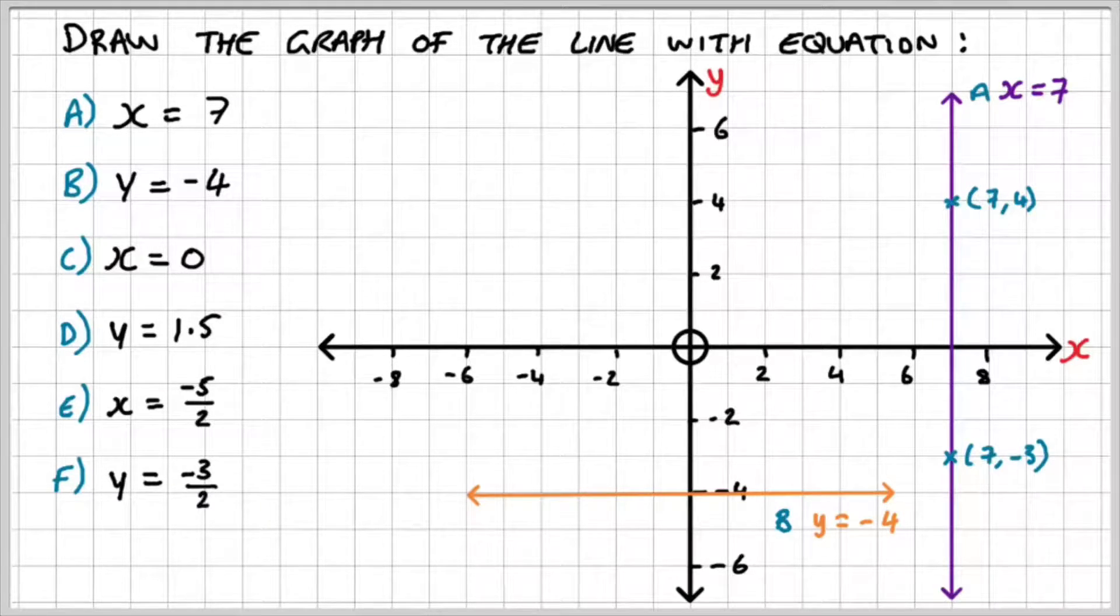For part b, y is equal to negative 4. That's this line here. Regardless of what the x-coordinate is, y is always equal to negative 4.